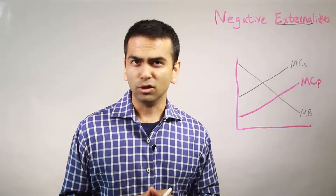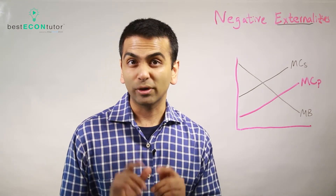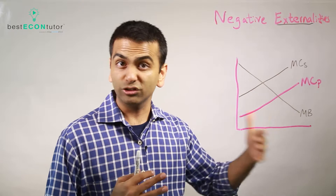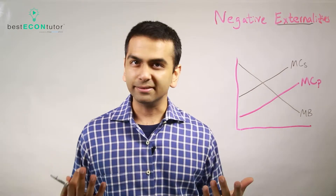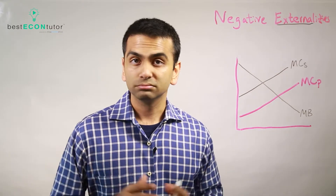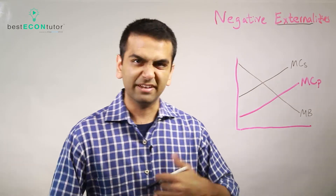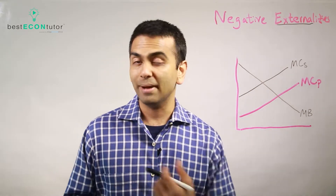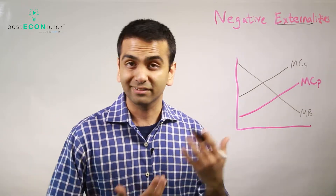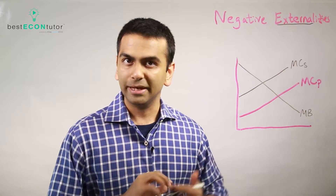So externalities — what does that word even mean? It comes from the word 'external,' which is when a third party is affected by either the production or consumption of a good. Take cigarettes for example: somebody other than the cigarette vendor and the cigarette buyer is affected — like the person who gets secondhand smoke blowing in their face. They're negatively affected even though they're not represented in the supply and demand curve.